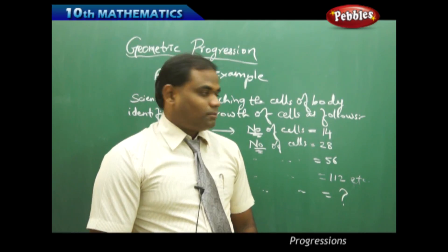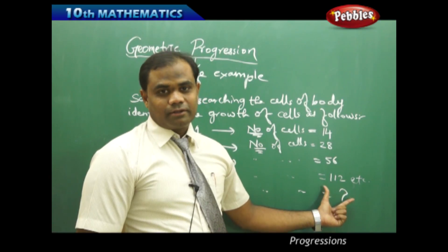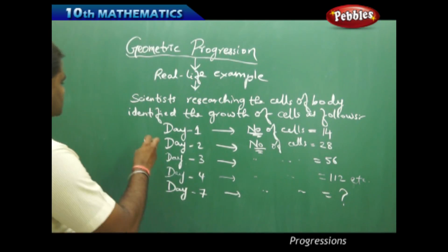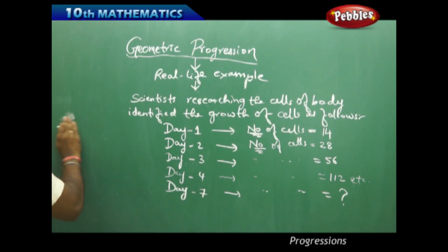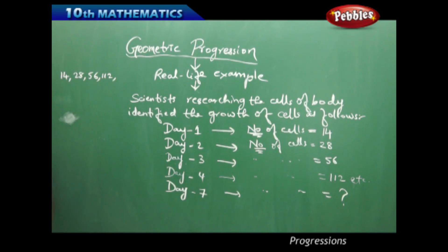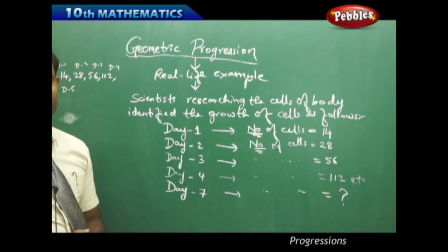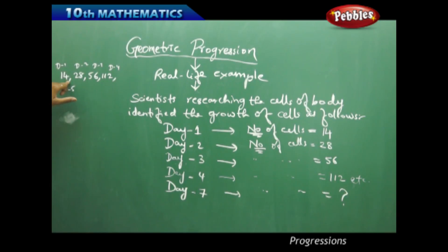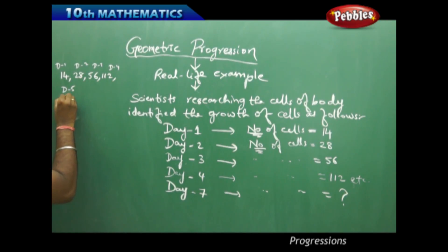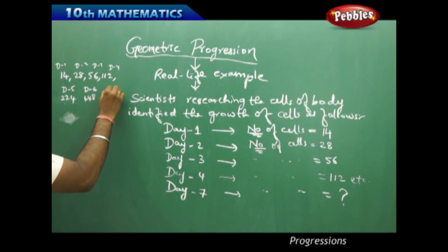To find the number of cells growing on day seven for the particular specimen, we need to identify a pattern. Looking at the sequence 14, 28, 56, 112, I clearly identify that when I multiply 14 by 2, I get 28; 28 times 2 is 56; 56 times 2 is 112; 112 times 2 is 224 for day five; and 224 times 2 is 448 for day six.